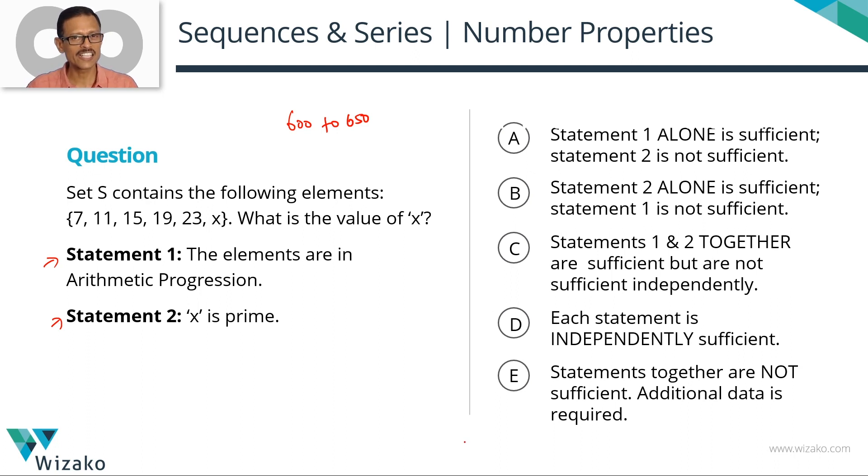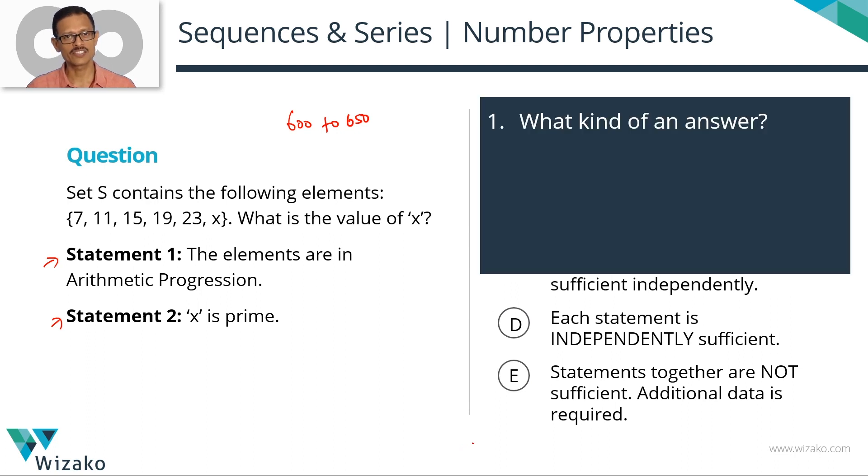Before you solve any data sufficiency question, run through this quick checklist. It'll take you all of 10 seconds but this clarity will help you get answers right. The first one is what kind of an answer will this question fetch? It is what is the value of x? So you need to come up with an answer which is a number. You can say x equals 21, x equals 93. A value is the answer to this question. In some cases it might be speed in which case it should be a number followed by a unit of speed. So have that level of clarity.